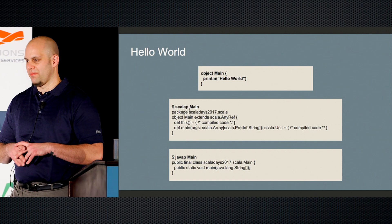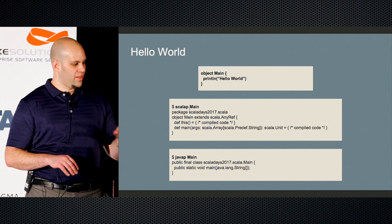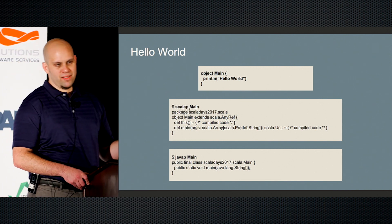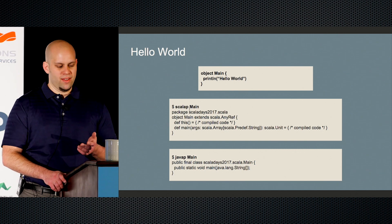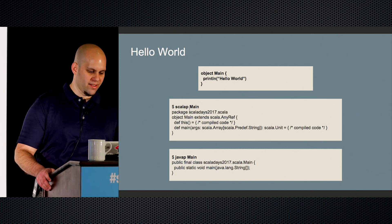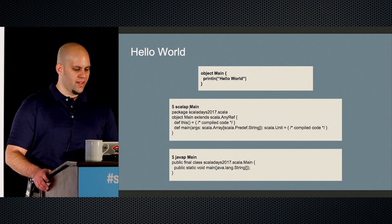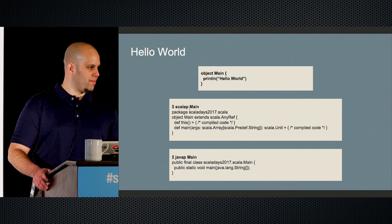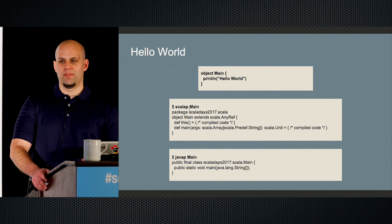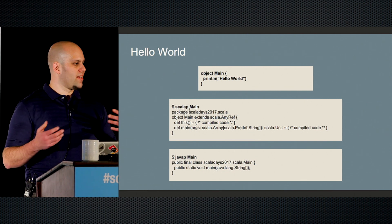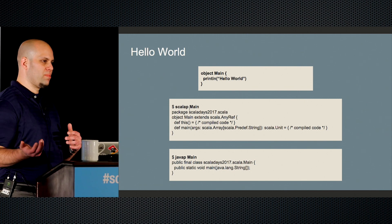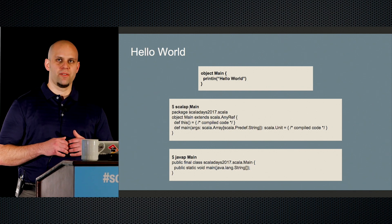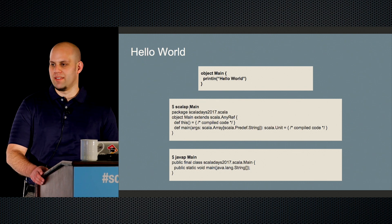Let's start with Hello World — the simplest example. In the first box is just source code: I have object main and just a println statement. When I look at the scalap output, it's exactly what I would expect: I have object main, it extends AnyRef, there's the constructor for it, and then the main method. When I use the Java profiler, it's also exactly what I would expect. And now I can see how the Scala profiler and Java profiler work to deconstruct that .class file in terms of method signatures.